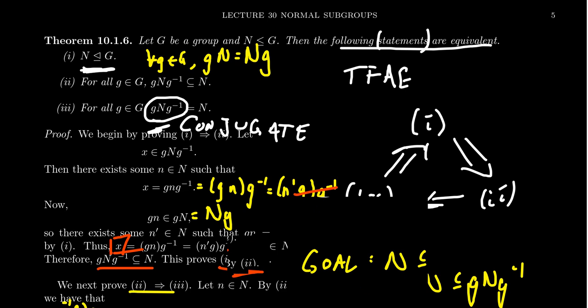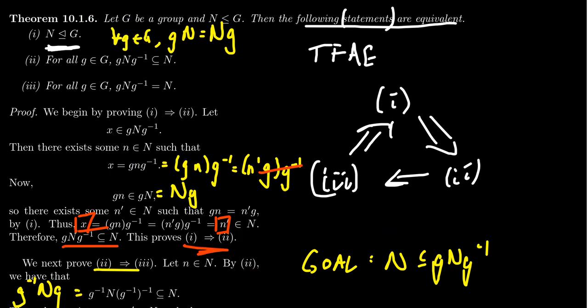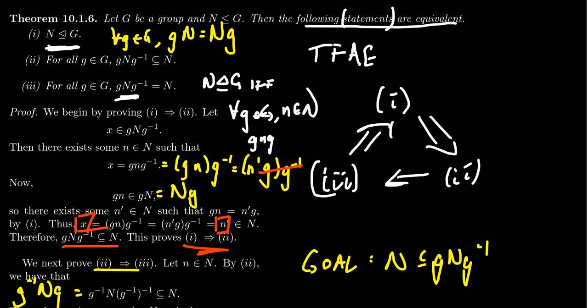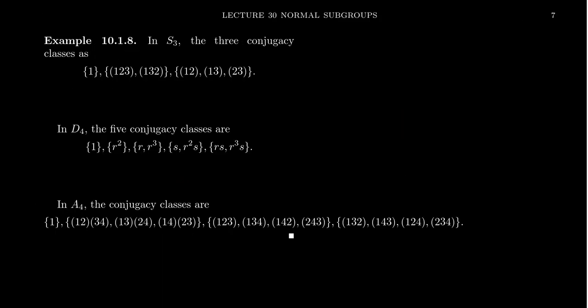Conjugates are a pretty big deal in group theory. Coming back to a previous theorem, you can talk about conjugates of a subgroup. One equivalent characterization of a normal subgroup is that it is closed under conjugation: a subgroup N is normal if and only if for all g in G and n in N, we have g n g-inverse in N. A normal subgroup is closed under multiplication, identity, and inverses — but the extra property is closure under conjugation.